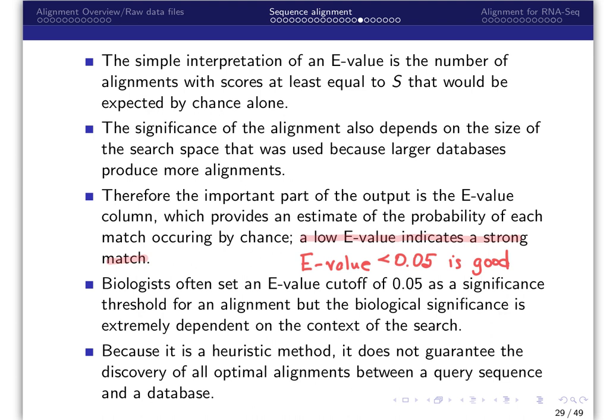Biologists often set an E value cutoff of 0.05 as a significance threshold for an alignment, but the biological significance is extremely dependent on the context of the search. Because it is a heuristic method, it does not guarantee the discovery of all optimal alignments between a query sequence and a database.